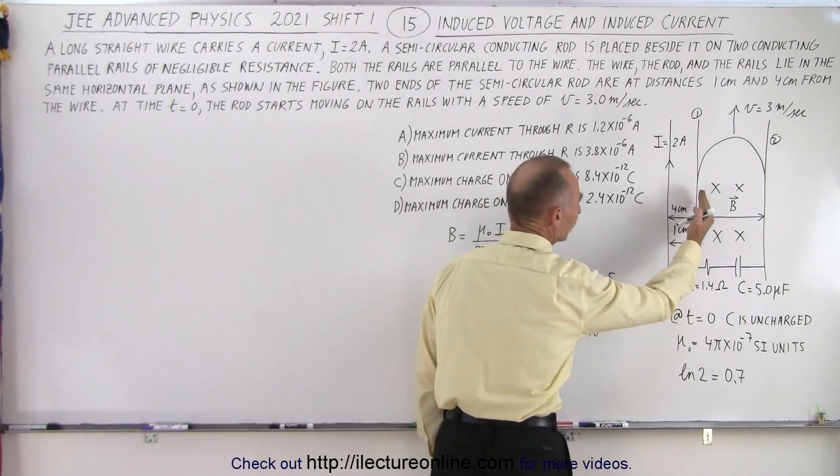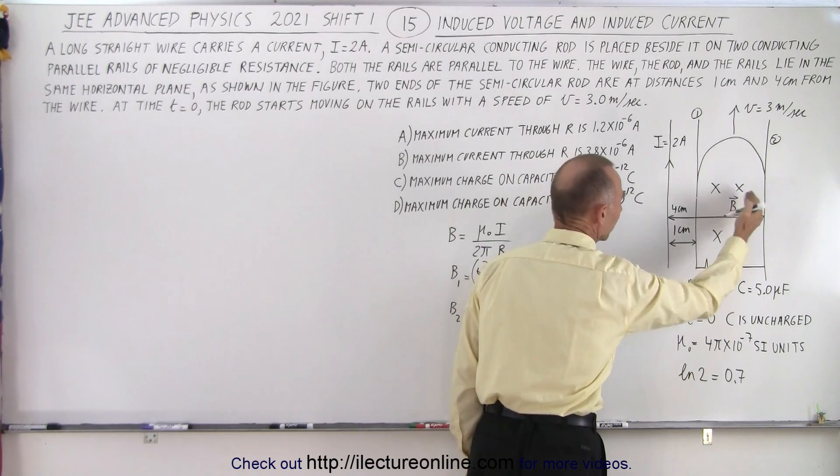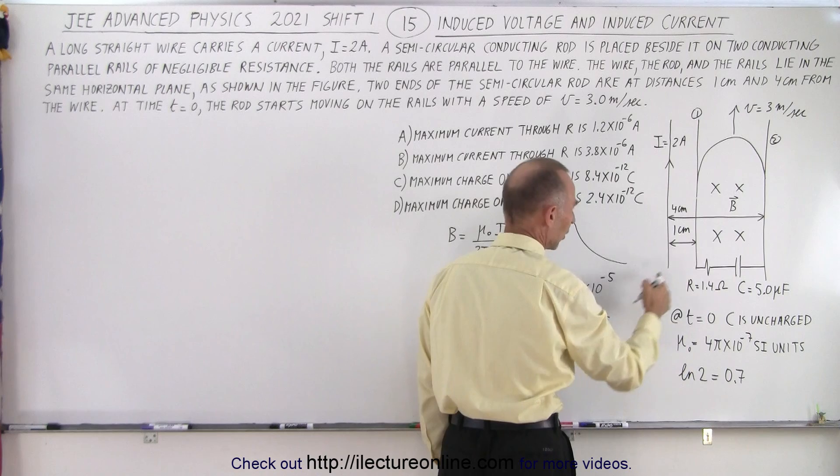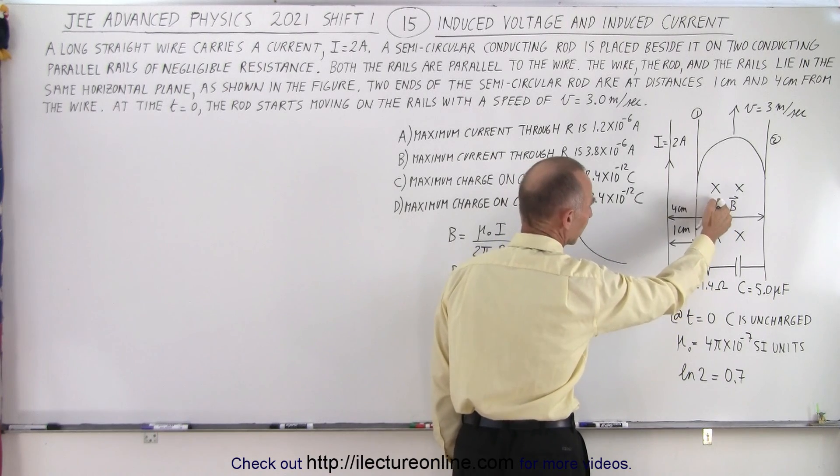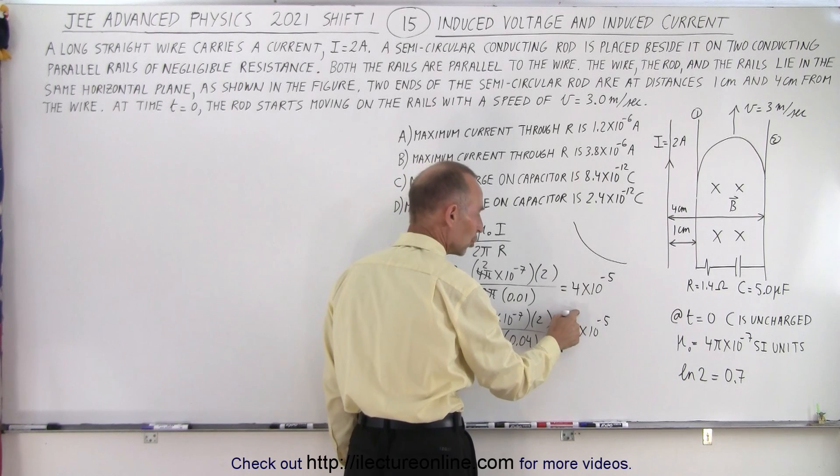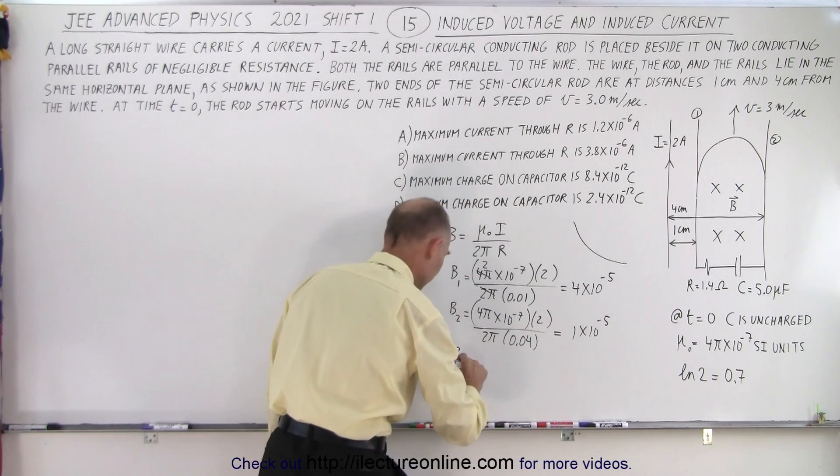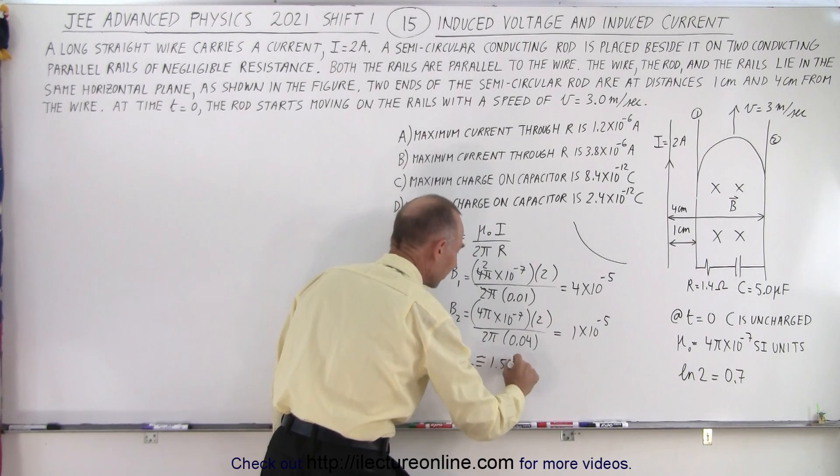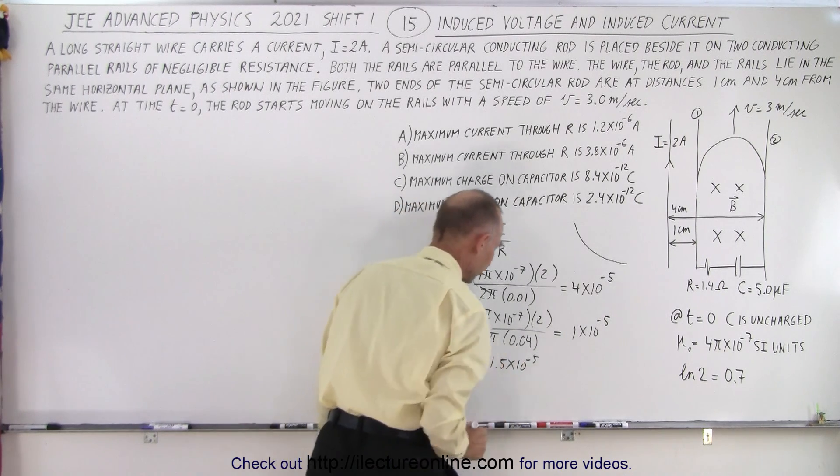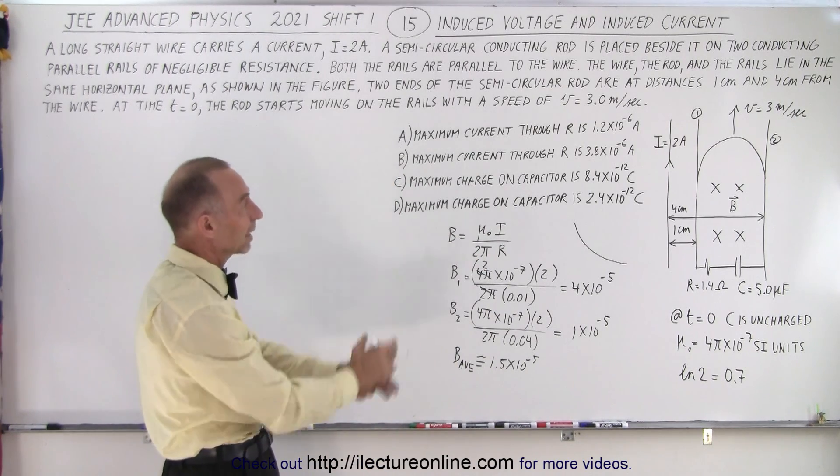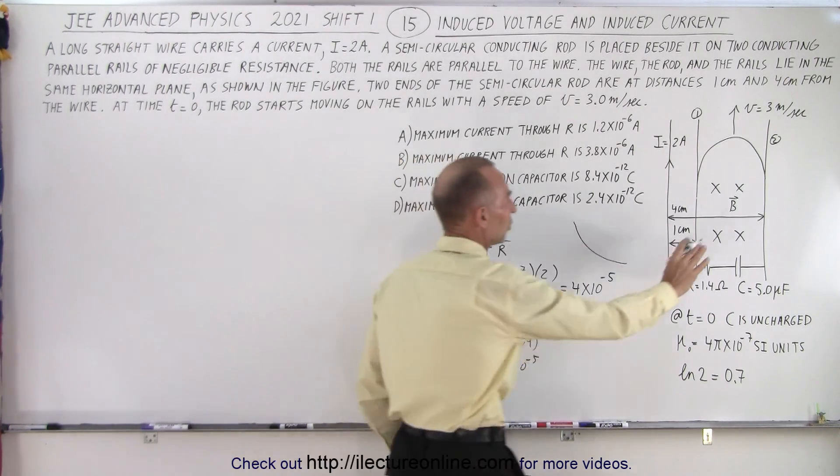So the magnetic field is 4 times 10 to the minus 5, 1 times 10 to the minus 5. You know that it drops off exponentially like this because the magnetic field one centimeter in, if we replace that by 0.02 it would already be down to 2. So the average magnetic field would be about 1.5 times 10 to the minus 5. That gives us a quick feel of what the average magnetic field is inside this region.